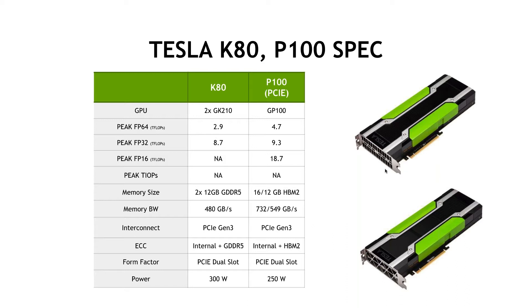From an ANSYS licensing standpoint, you have an advantage with the P100 because ANSYS calculates licenses based on the number of GPUs. The performance with P100 is superior to K80, and you also have a cost advantage in terms of licensing because you're consuming only one GPU versus two GPUs with a K80. The P100 also comes with more memory bandwidth while consuming less power.